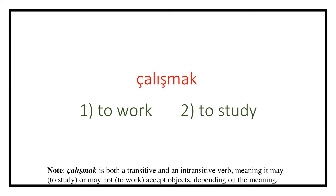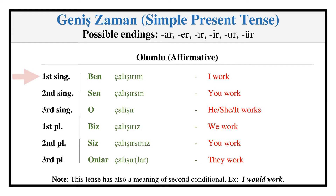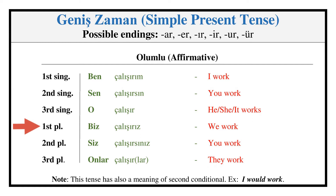ÇALIŞMAK. Aorist (Simple Present) — Affirmative: ÇALIŞIRIM, ÇALIŞIRSIN, ÇALIŞIR, ÇALIŞIRIZ, ÇALIŞIRLAR.